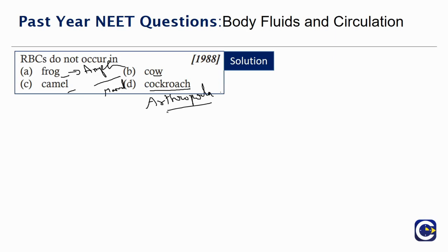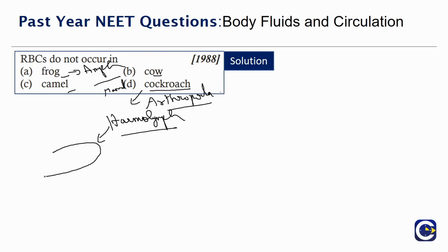The specific character of Cockroach is that it has Hemolymph. So what is this Hemolymph? This Hemolymph is a fluid basically that is white in color. So when we dissect a frog, we can see that there is no red blood.